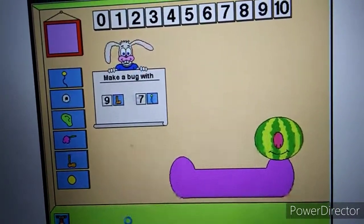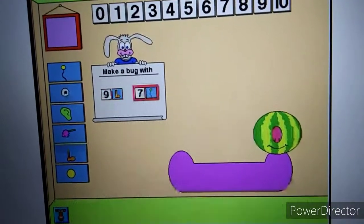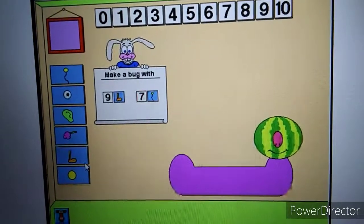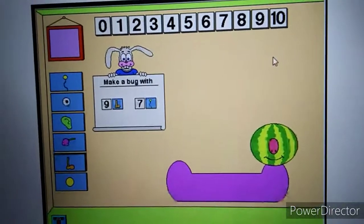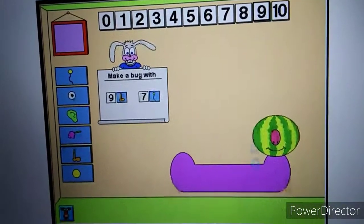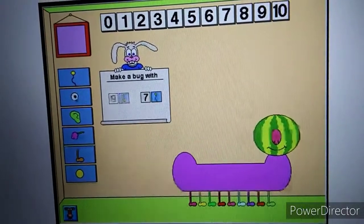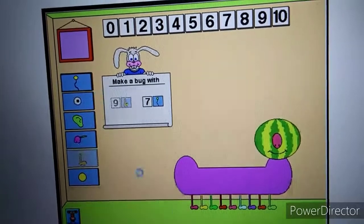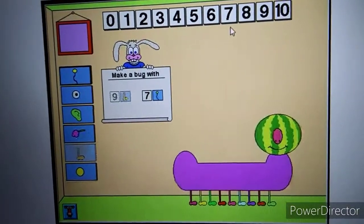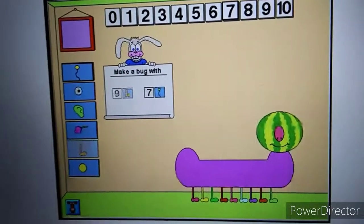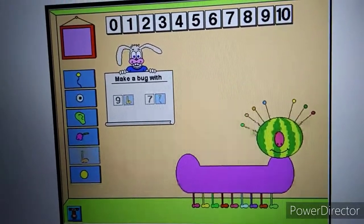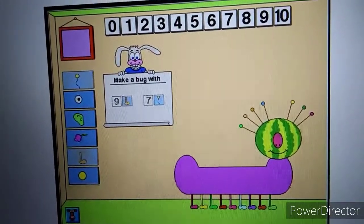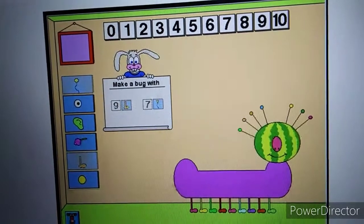Make a bug with nine feet and seven antennae. Nine feet. Seven antennae. You're really good at this.